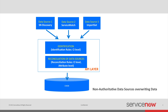The other process involved is reconciliation of data sources. Reconciliation defines the process of reconciling CI attributes by allowing only authoritative data sources to write to CMDB, and it relies on reconciliation rules. Reconciliation is helpful in addressing the non-authoritative data source overwriting issue, and thus both issues should be solved based on this API layer.